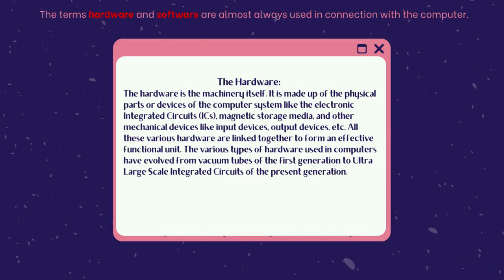The terms hardware and software are almost always used in connection with the computer. The hardware is the machinery itself. It is made up of the physical parts or devices of the computer system like the electronic integrated circuits (ICs), magnetic storage media, and other mechanical devices like input devices, output devices, etc. All these various hardware components are linked together to form an effective functional unit.